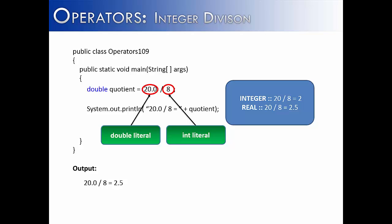So any time a real number is introduced, like 20.0, we're going to get a real result, as opposed to an integer result. And we would get 2.5 in this case, as opposed to 2.